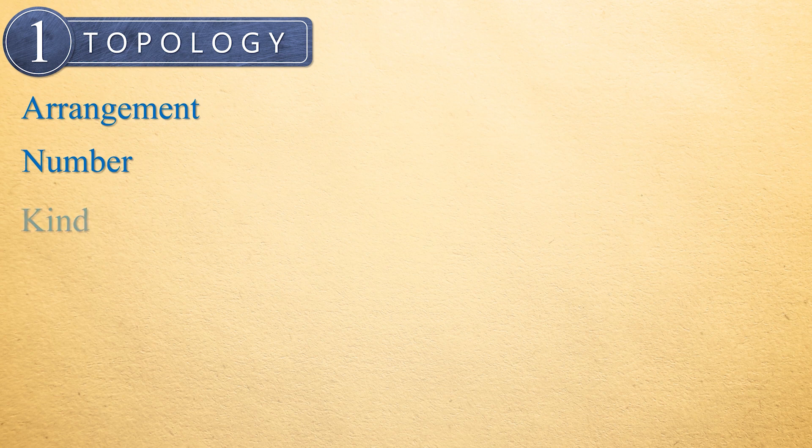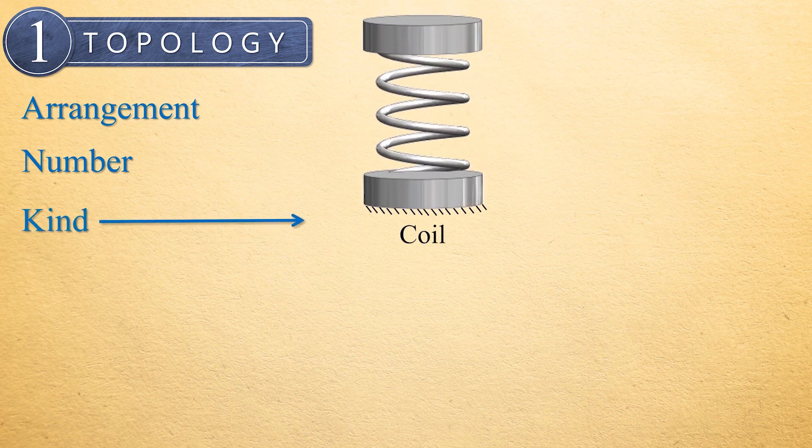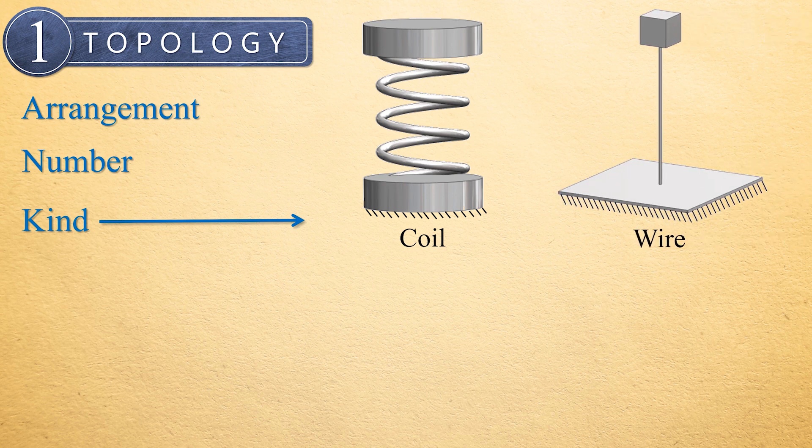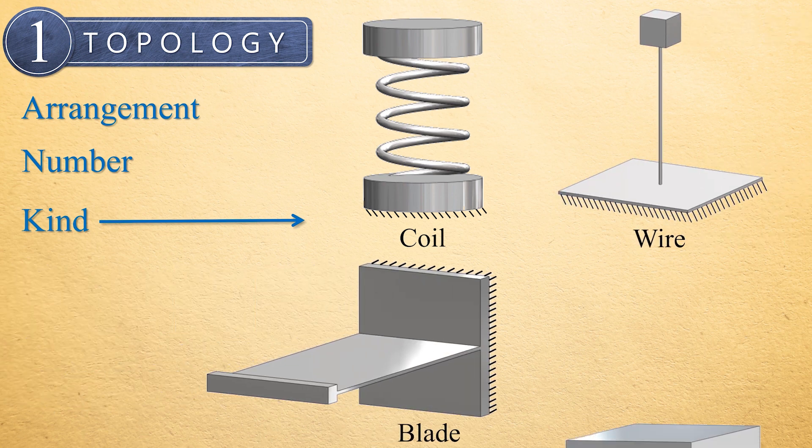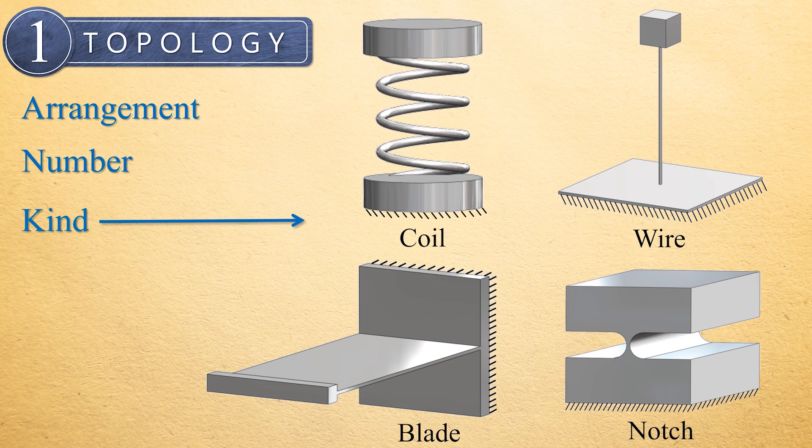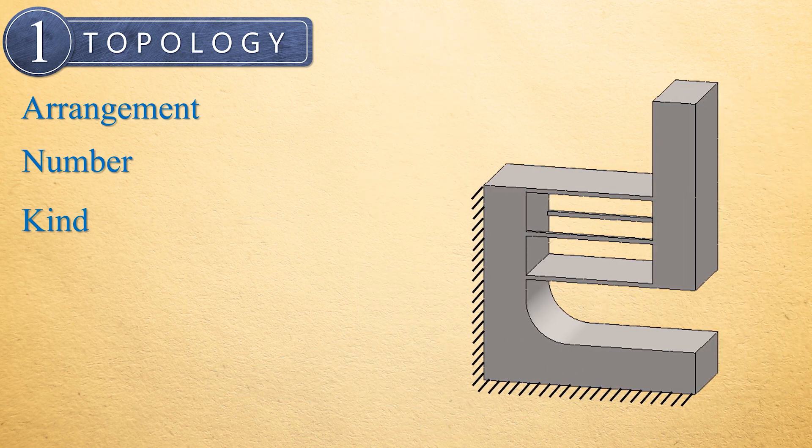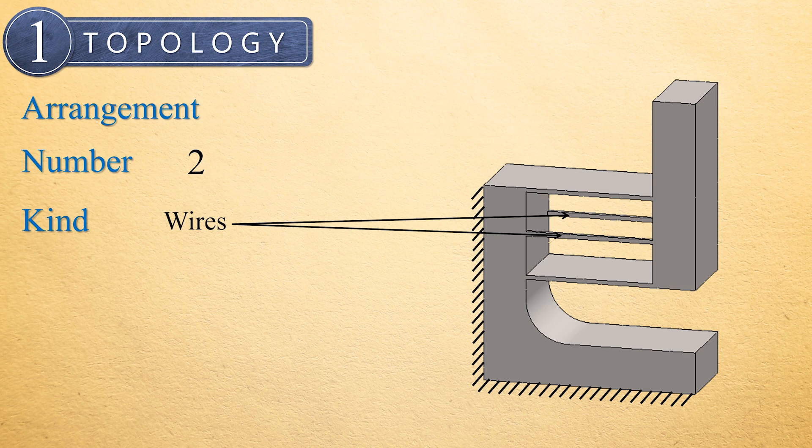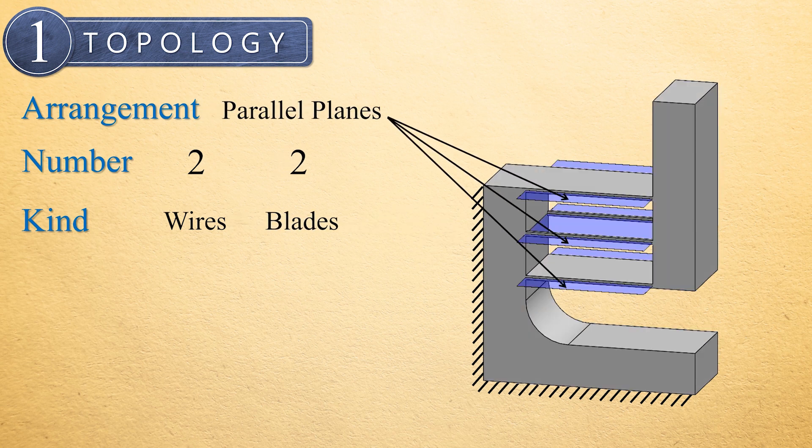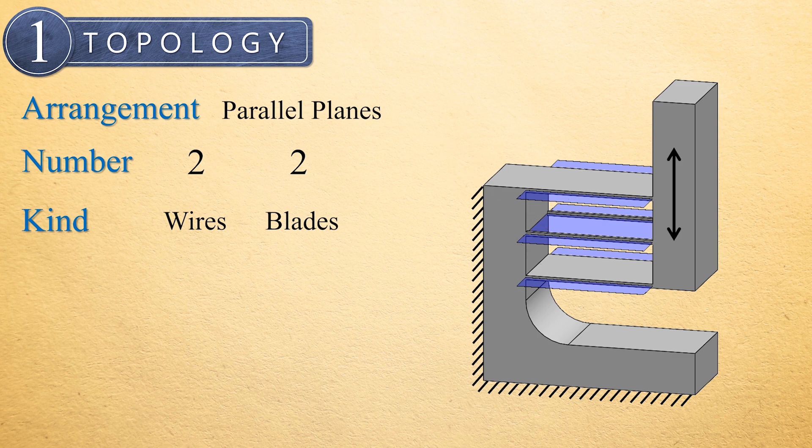Typical kinds of flexible elements include coiled elements, wire flexures, blade flexures, or notch flexures, to name just a few. The topology of this particular spring consists of two parallel wire flexures and two blade flexures that are arranged on parallel planes, which are perpendicular to the direction of the spring's displacement, as shown.